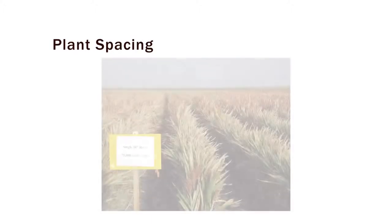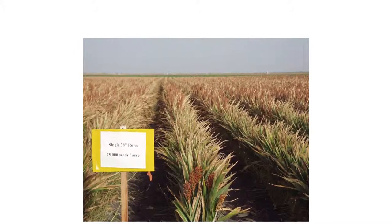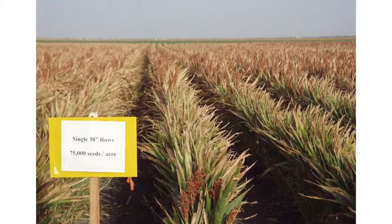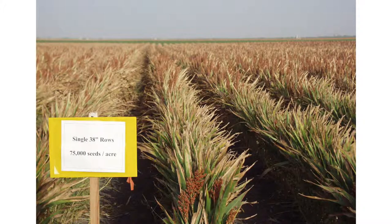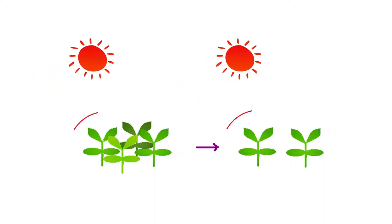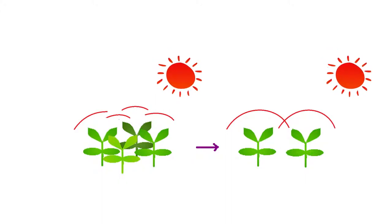Secondly, when we are growing crops in our farms, we have to adhere to spacing. Spacing is important for each plant to get enough light to grow healthy. Under the same conditions of light, the plants crowded together in a farm receive less light per plant than those which are well spaced.